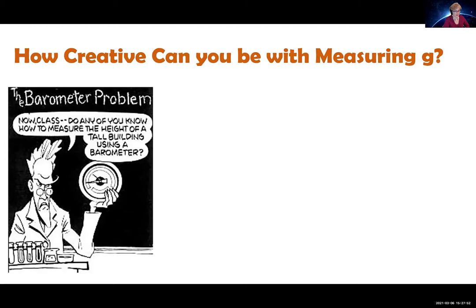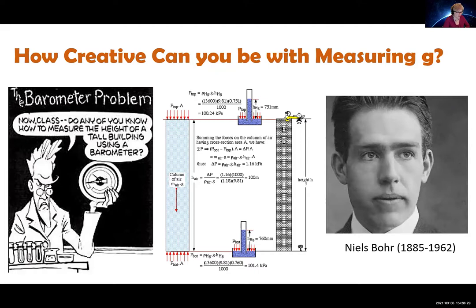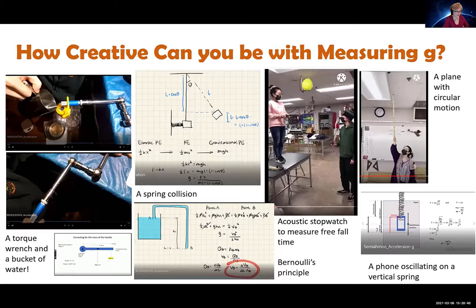You might think measuring g is easy — everybody knows what g is. But there's a famous story about Niels Bohr, who was given a barometer at a physics exam and asked to suggest how to measure the height of a building using it. He came up with lots of ways, including dropping the barometer from the top and measuring how long it takes to fall. After all, he was a Nobel Prize winner, and the Bohr atom model appears in many high school courses — something seemingly simple like g is not so simple after all.